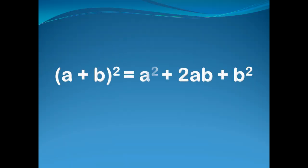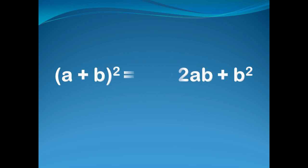A plus B, the whole square, is A square plus 2AB plus B square.